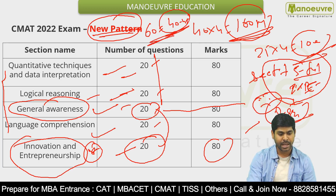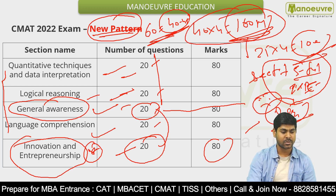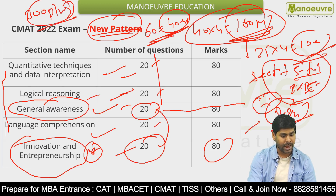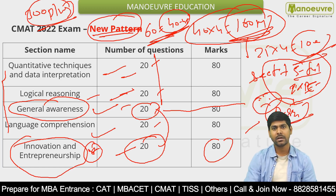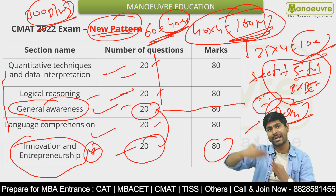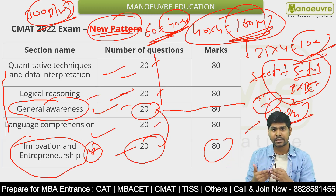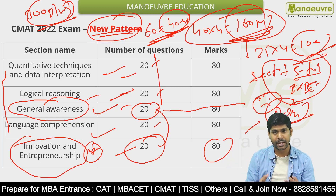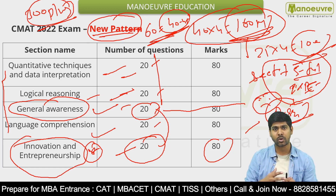The ideal score target has to be 300 plus. If your GK is prepared properly, and quant, logic and general awareness scores are also good, that will depend on your preparation. Logic and Innovation and Entrepreneurship — maximizing the score here is difficult. But if you have prepared properly, you might hit a good score.